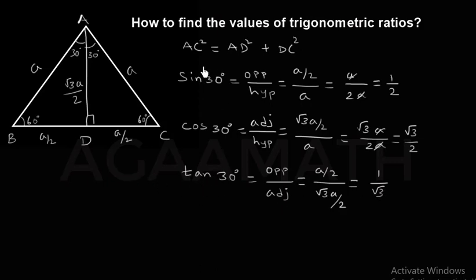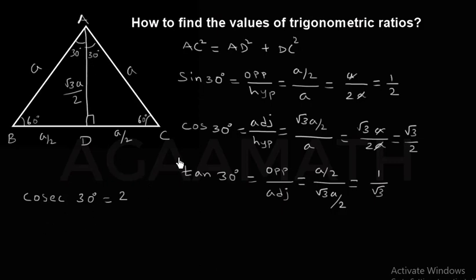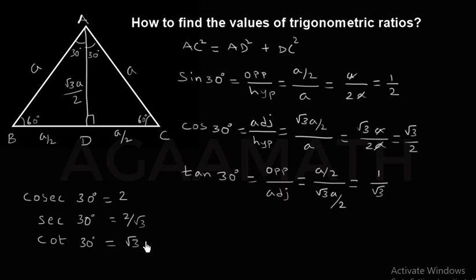So now we have the three ratio values. The inverse of sine is cosecant. Cosec 30 degrees is the inverse of sine 30, so the inverse of 1/2 is 2. Similarly, the inverse of cos is secant 30 degrees, so sec 30 = 2/√3. Then the inverse of tan 30 degrees is cot 30 degrees, which is √3/1, that is √3.